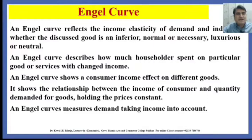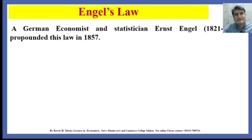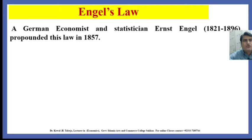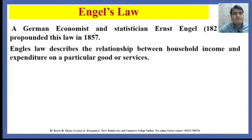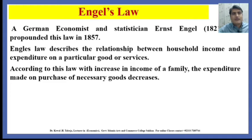What is Engel's Law, and who suggested this Engel Curve? A German economist and statistician Ernst Engel, who was born in 1821 and passed away in 1896, propounded this law in 1857. Engel's Law describes the relationship between household income and expenditure on particular goods or services. According to this law, with an increase in income of a family, the expenditure made on the purchase of necessary goods decreases.